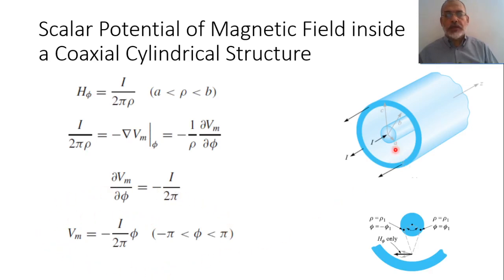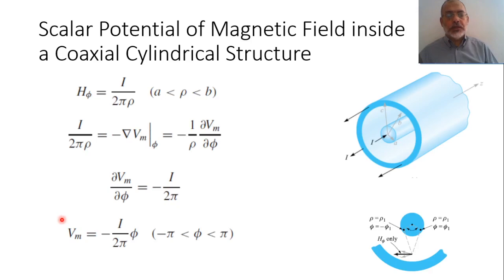This is the magnetic scalar potential inside a coaxial structure. As mentioned, this magnetic scalar potential will be quite useful for solving problems of electrical machines. In the following chapter there are examples based on this magnetic scalar potential, which we call magnetic circuits.